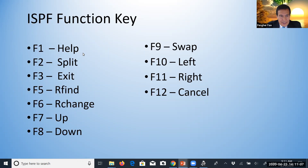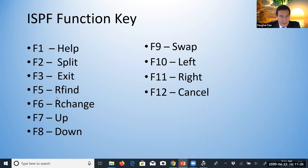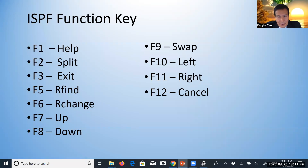F1 key is help — at any screen if you press F1, it will show the help. F2 is split, to split the menu. F3 is exit — from the current menu it will go to the upper level menu. F5 is R find. F6 is R change. F7 is up. F8 is down. F9 is left. F10 is left. F11 is right — if you have a very long record and want to see the right side, use F11. F12 is cancel.